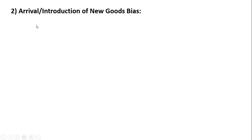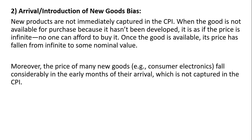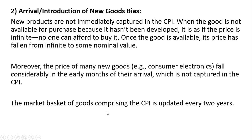Bias 2 is the arrival or introduction of new goods. New products are not immediately captured in the Consumer Price Index. When the good is not available for purchase because it hasn't been developed yet, it is as if the price is infinite — no one can afford to buy it. Once the good is available, its price has fallen from infinite to some nominal value. Moreover, the price of many new goods, for example consumer electronics, falls considerably in the early months of their arrival and this is not captured in the CPI. The market basket of goods comprising the CPI is updated roughly every two years.